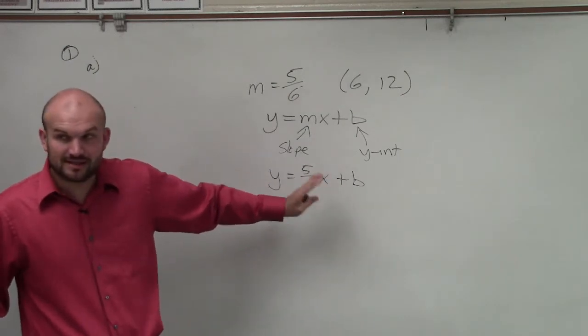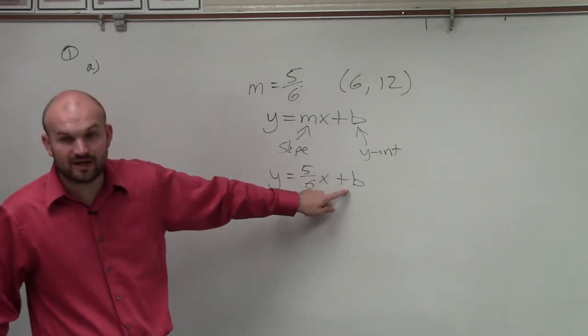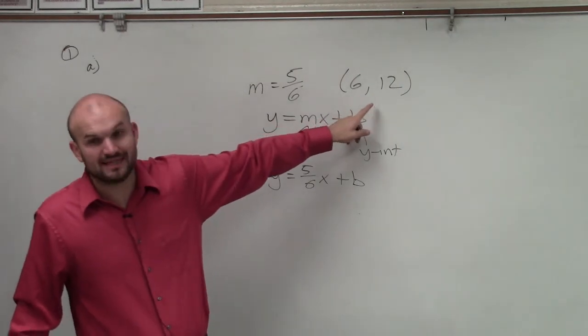Now, we need to write this equation in slope-intercept form. We need to find the value of b, but we don't have it. They just give us this point that lies on the line.